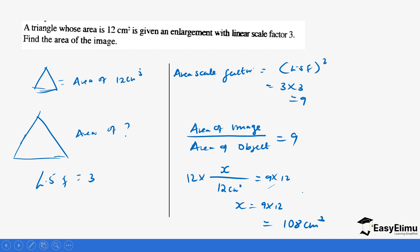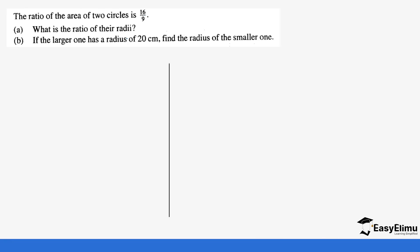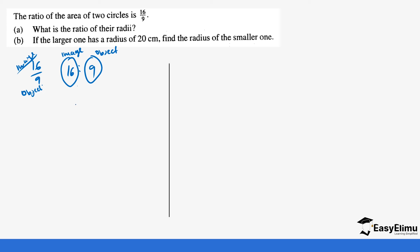Let's do another example. The ratio of the area of two circles is 16 over 9, which is the same as 16 is to 9. This tells us that 16 is for the image and 9 is for the object, because the upper value is for the image and the lower one is the object. So for us to get the linear scale factor, we need to do the square root, because we took the linear scale factor and squared it to get the area scale factor.